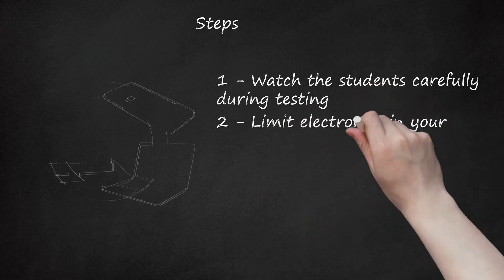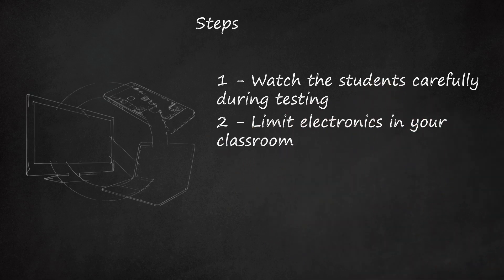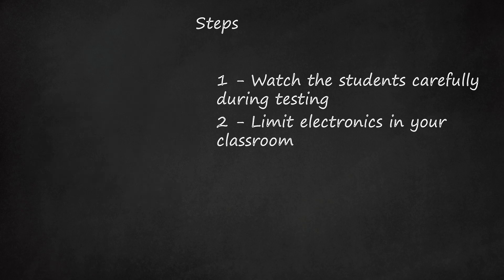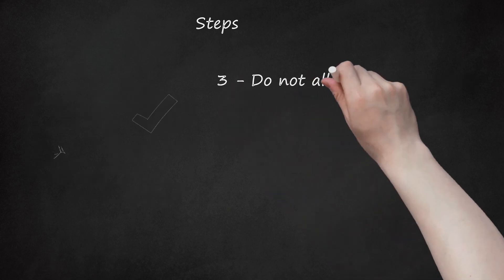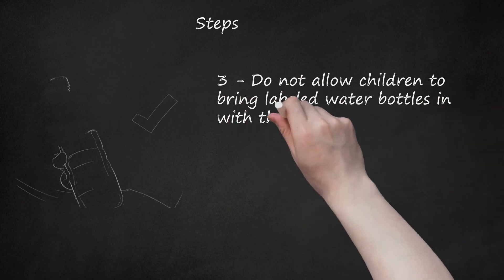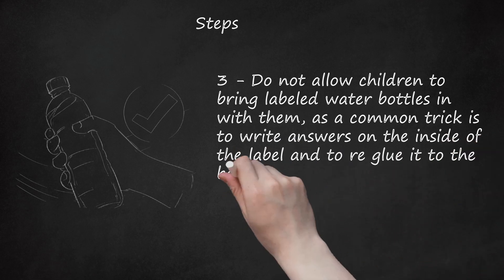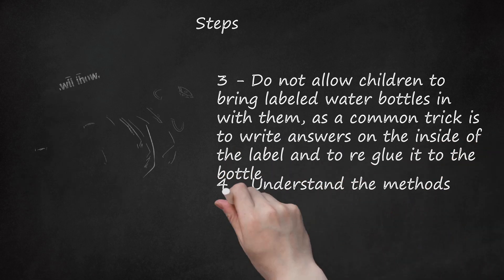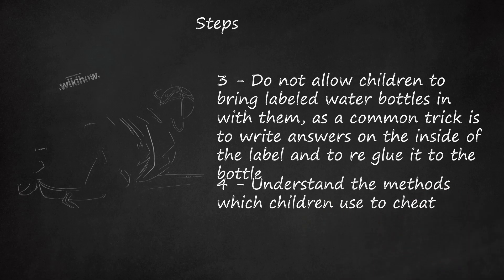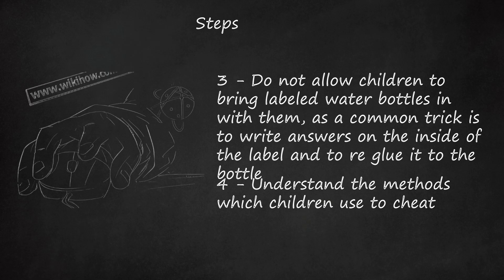Step 2: Limit electronics in your classroom. Just do not allow children to bring cell phones and MP3 players into class with them on test days. This will eliminate many of the newer methods being used. Step 3: Do not allow children to bring labeled water bottles in with them, as a common trick is to write answers on the inside of the label and re-glue it to the bottle. Step 4: Understand the methods which children use to cheat. WikiHow has an entire category on cheating and happens to be a very good source of this cheating information, as children are constantly creating and editing the cheating articles here to include their latest tricks.